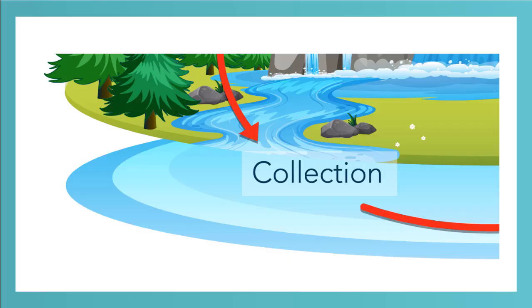The last stage of the water cycle is collection or storage of water on earth's surface. This happens by streams or rivers, which bring the water that fell to the earth to large storage areas like oceans and lakes.